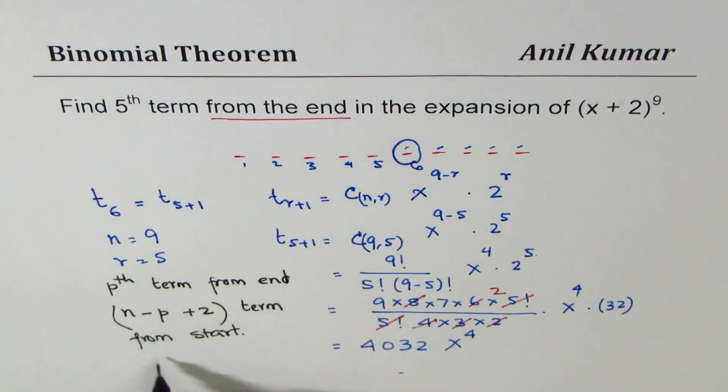n is 9, so in our case, n is 9 minus 5 plus 2, which is 6.